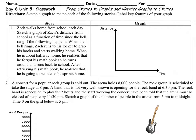Zach walks home from school each day. Sketch a graph of Zach's distance from school as a function of time since the bell rang if the following happens. We can see the distance is the y-axis and time on the x-axis. First of all, when the bell rings, Zach runs to his locker to grab his books. He's just going to run to his locker, so he's still at school. He didn't really change his distance right now.